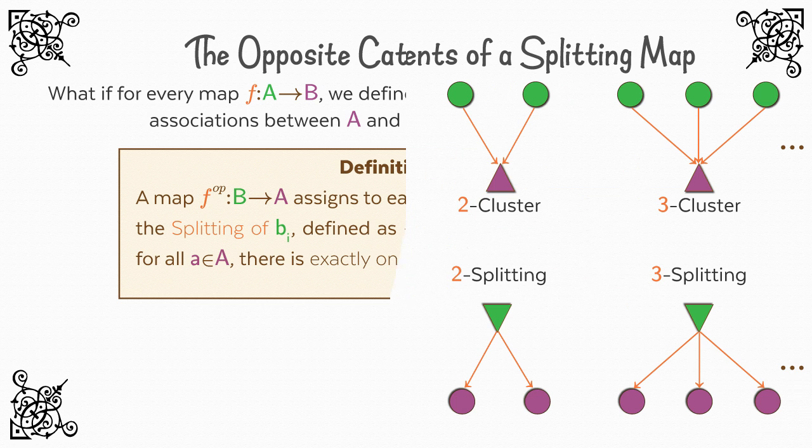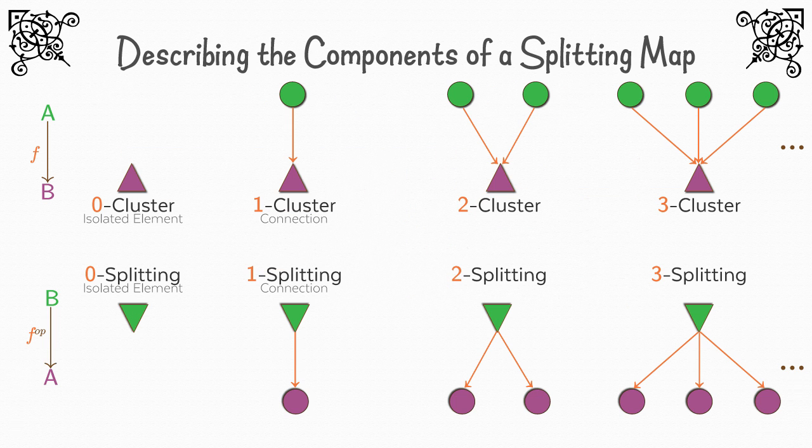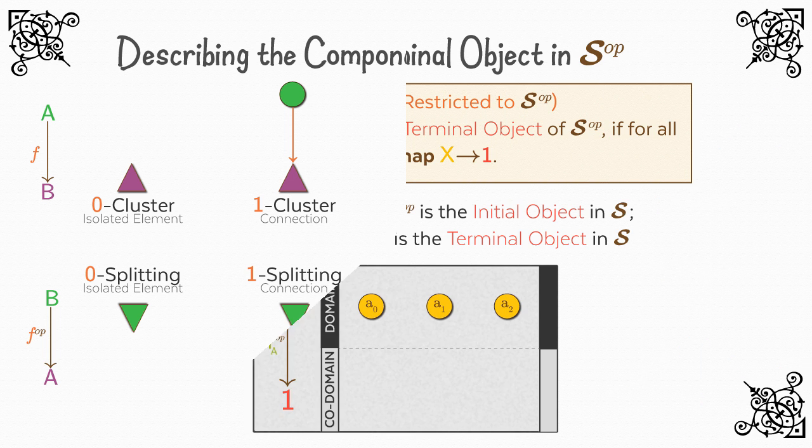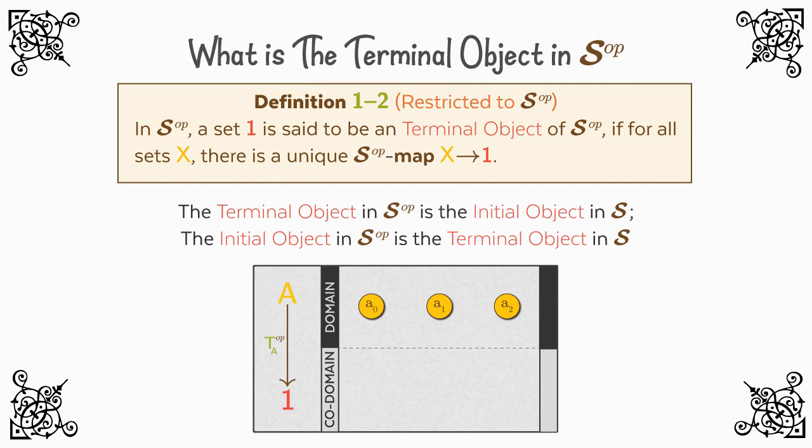We said that in S-op, maps are best thought of in terms of splittings rather than clusterings, and that the order of assignment in maps matters. We saw that the terminal object of S was the initial object of S-op, and vice versa.